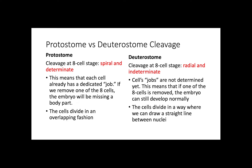For deuterostomes, with radial and indeterminate cleavage, we're going to see that these eight cells do not have their roles already determined. So, if we remove one of the eight cells, the other seven cells will be able to compensate for that eighth cell and the embryo can still develop normally. This radial cleavage means that the cells are going to divide in straight lines, so we can draw a line between the nuclei.